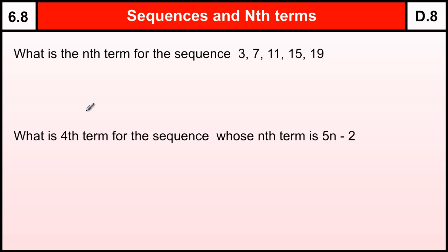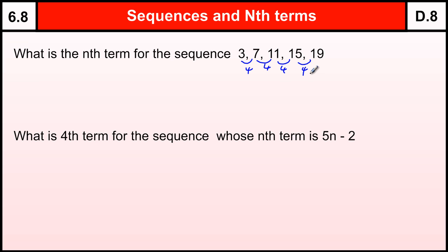Level 6, Grade D: Sequences and Nth Terms. The Nth term of a sequence — for a standard linear sequence that goes up by the same number each time, we use this method where we always look to see what it goes up by. If it goes up by the same number each time, that number is what the sequence is based on — that number is the times table the sequence is based on.